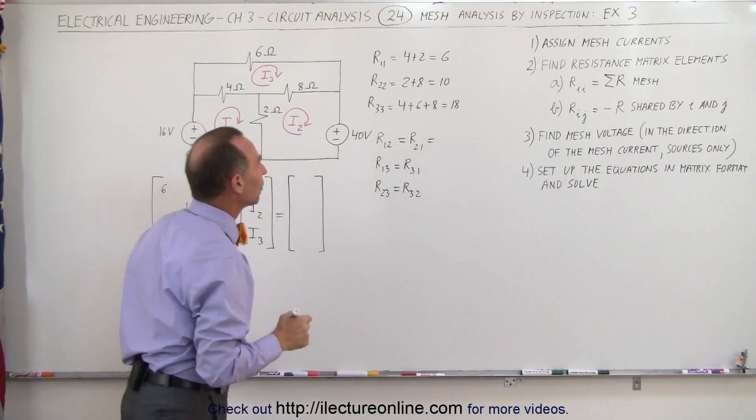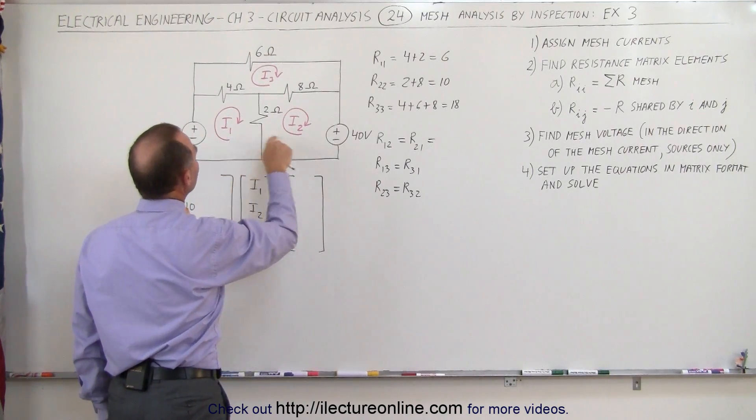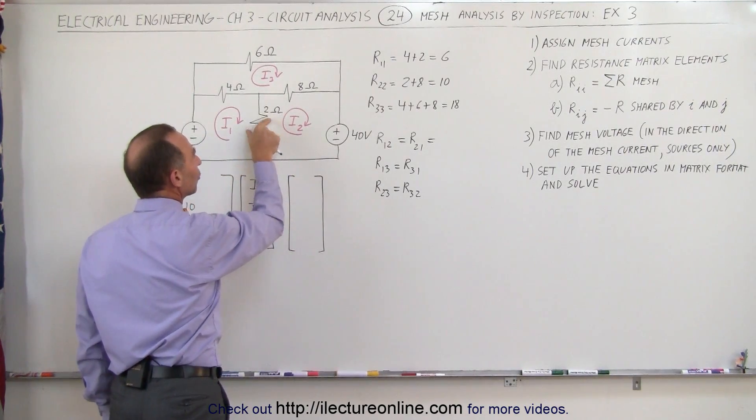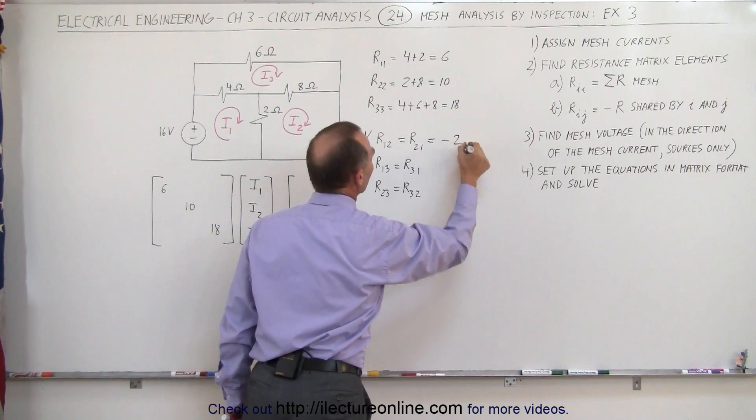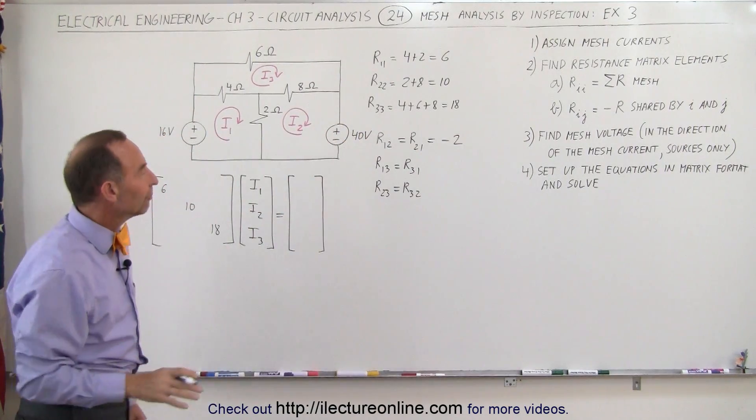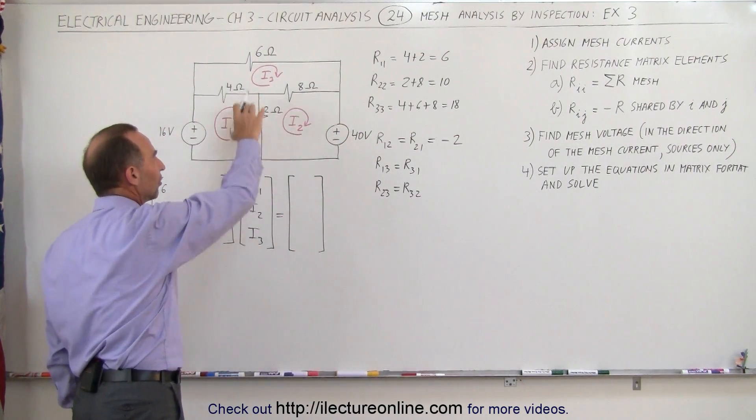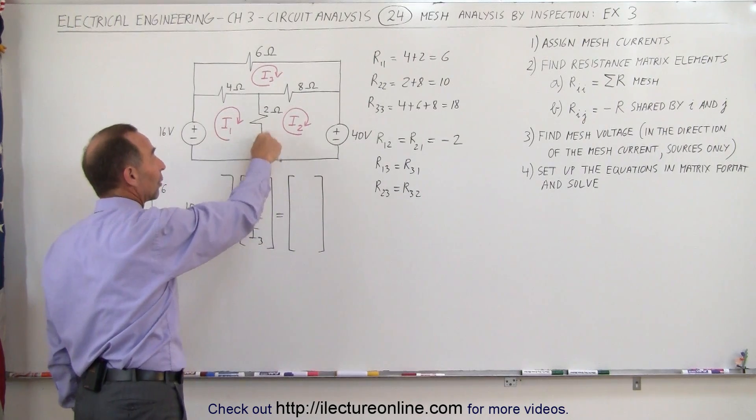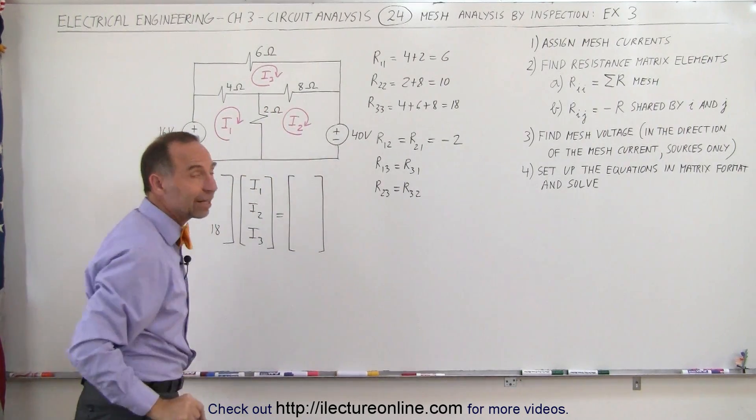Here we find the values shared between 1 and 2. Between these two, we have a 2 ohm resistor shared. So we write a negative 2. We always write the negative of the total value of resistance shared. If there was a second resistor there, we'd have to add them together, but put a negative in front of that.